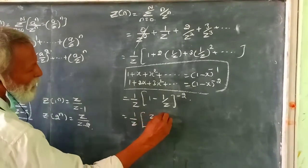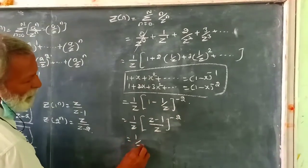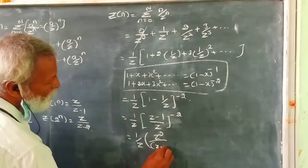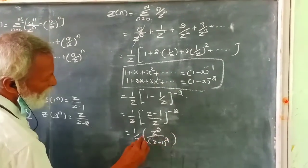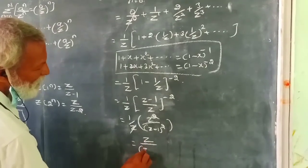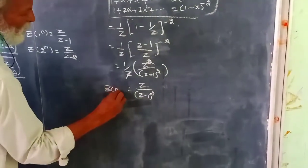This equals 1/z times z²/(z-1)². Simplifying by eliminating z, we get z/(z-1)². So the Z transform of n is z/(z-1)².